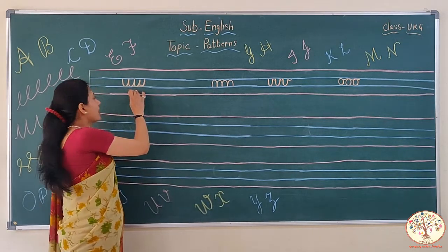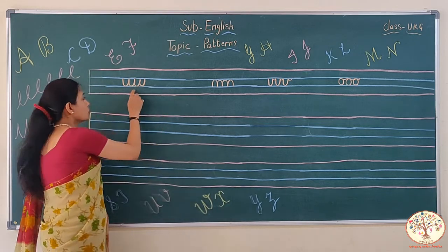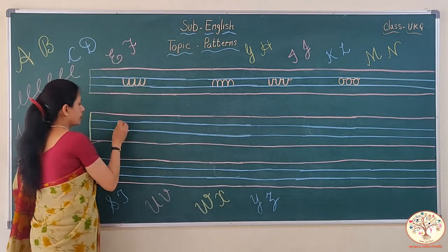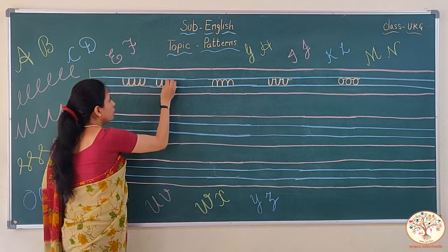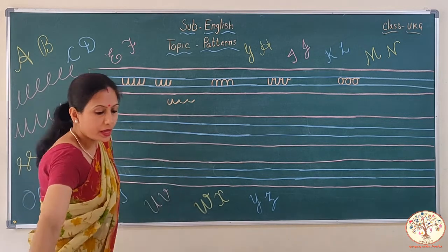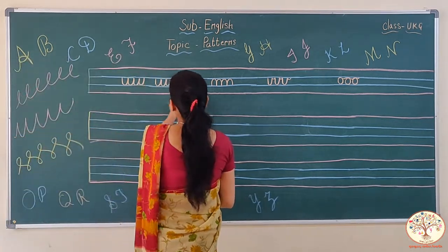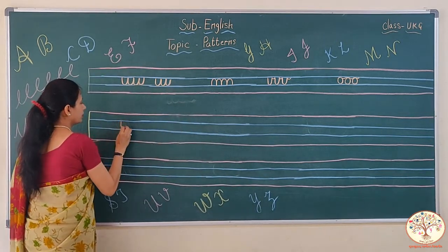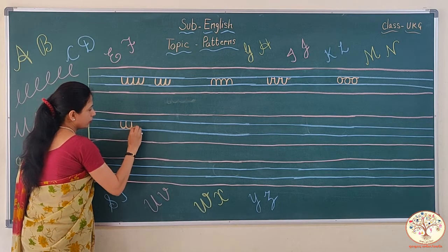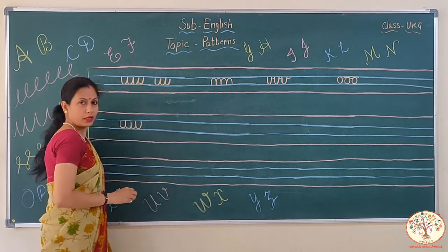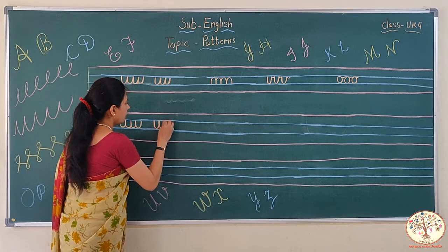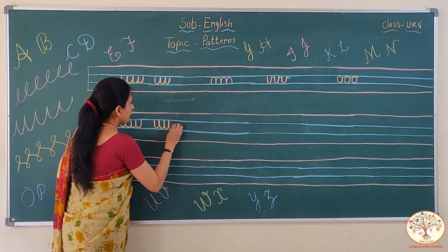Which pattern is this? You have learned the U pattern. This is also the U pattern, but we will write it in between these two lines. Small loops. U, again U, again U. We have to go on the same line — come down on the same line, and then U, same line U, same line U.